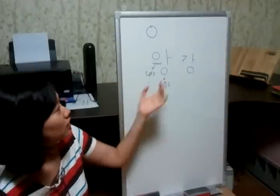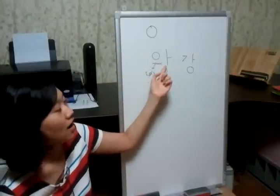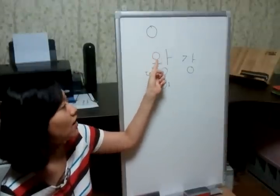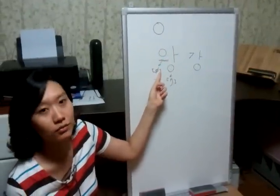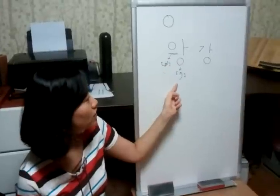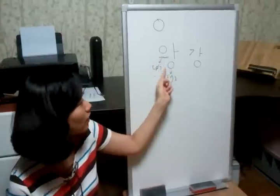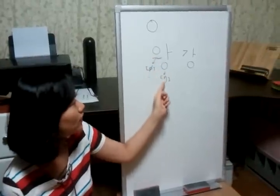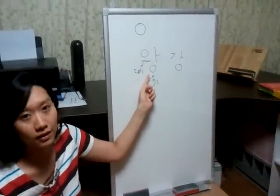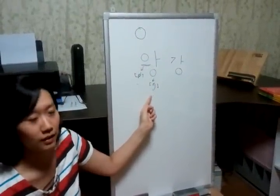For example, this syllable 아 — in this case, the beginning consonant has no phonetic value. While this ending consonant, the same consonant, however, when it is used at the ending of the syllable, it has the phonetic value of the 음 sound.